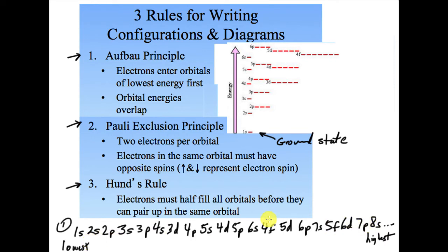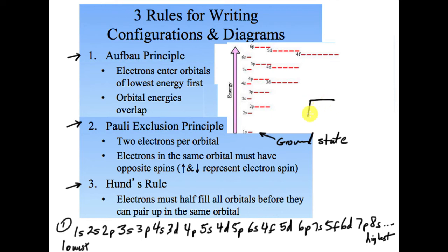That's the Aufbau principle — fill lowest energy to highest. There's a trick to remembering this order that I'll show you in just a bit. The second rule is the Pauli exclusion principle: two electrons per orbital. I can only put two electrons in each orbital. The electrons in the same orbital have to have opposite spins. We use an up and a down arrow. When I fill the box — the orbital — the first electron has an up spin and the second has a down spin.